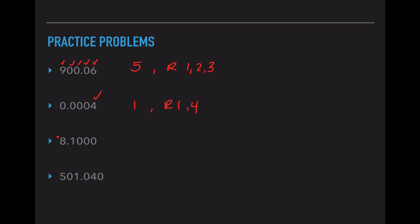For 8.10000: the 8 and the 1 are automatically significant by rule one. For rule two — double or nothing — all three of the trailing zeros are to the right of a non-zero and to the right of the decimal, giving three more significant values. So we have five sig figs using rules one and two.